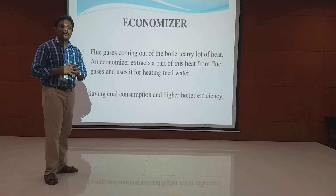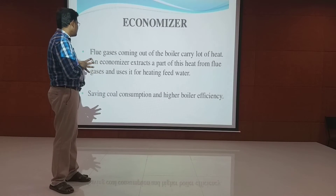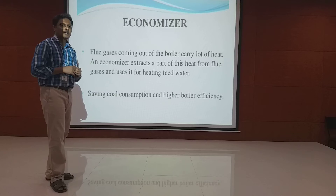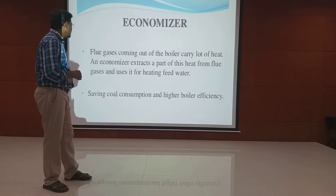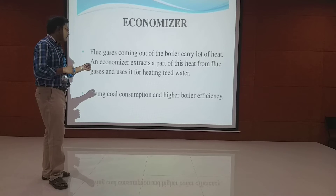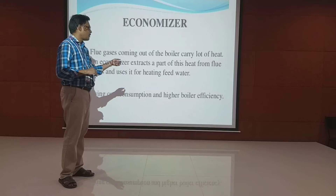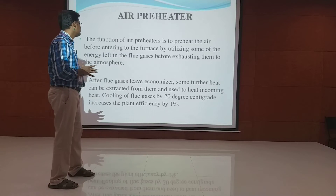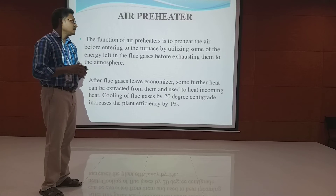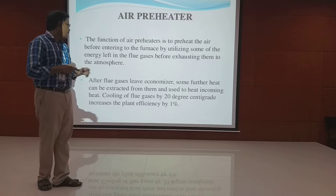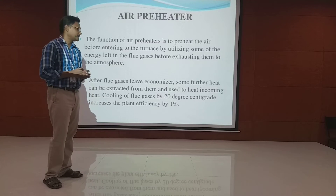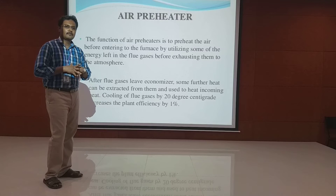The economizer is a type of preheater or superheater where flue gases coming out of the boiler are used to heat the feed water. It extracts part of the heat from flue gas for heating feed water again, saving coal consumption and improving boiler efficiency. The air preheater preheats the air before it enters the furnace by utilizing energy left in the flue gases. After flue gases leave the economizer, further heat extracted can increase plant efficiency by around 1 percent.